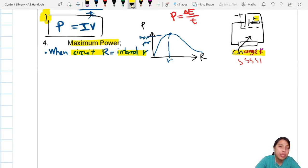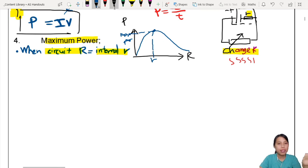So when your circuit R equals to internal R, then you will have maximum power. And that's why the graph roughly looks like this, increase to a maximum and then decrease when you change the R up and down. But why is that? Let's go through this step by step.